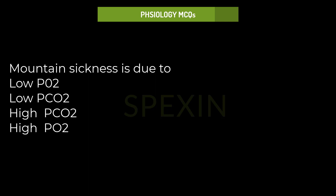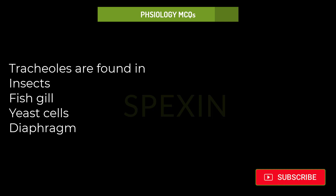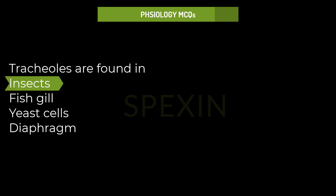Mountain sickness is due to: Low pressure of oxygen, Low pressure of carbon dioxide, High pressure of carbon dioxide, High pressure of oxygen. Correct answer: Low pressure of oxygen.